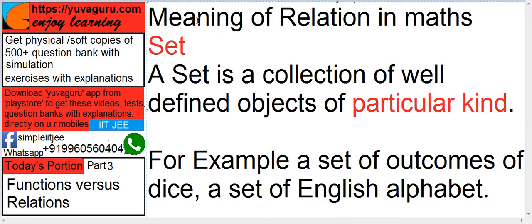Before going to relations, you need to understand what are sets. Now what is a set? A set is a collection of well defined objects of a particular kind. You sit in a class. The whole class is a set. A set of outcomes of dice. How many outcomes can be there? A set of English alphabets. Your family. It's a set.